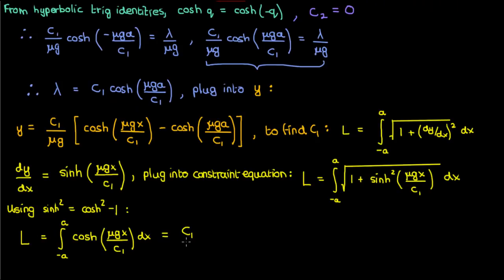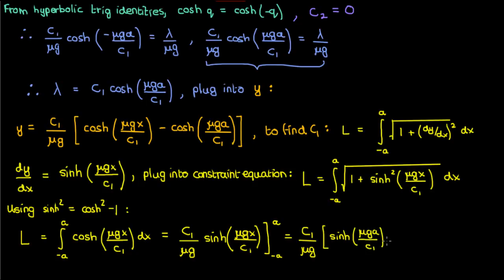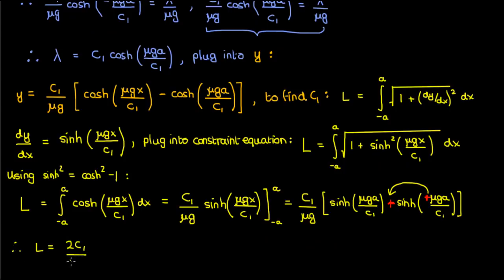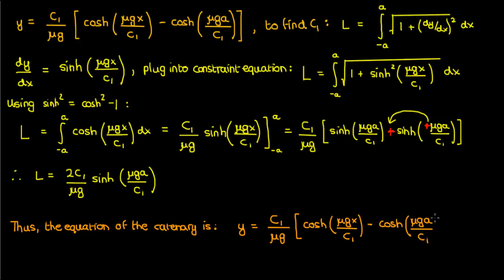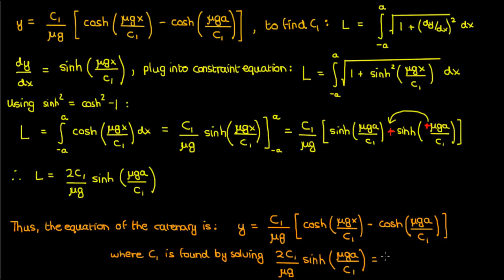Integrating the hyperbolic cosine gives hyperbolic sine. Applying the limits gives the hyperbolic sine of (mu g a over c1) minus the hyperbolic sine of negative (mu g a over c1). Using the property that sinh of negative something equals the negative sinh of something, we turn the minus into a plus. The equation for c1 becomes 2c1 over mu g times the hyperbolic sine of (mu g a over c1) equals L. So the catenary equation is y equals c1 over mu g times [cosh(mu g x over c1) minus cosh(mu g a over c1)], where c1 is found by solving this nonlinear equation in terms of L. This equation is difficult to solve analytically but can be solved numerically.